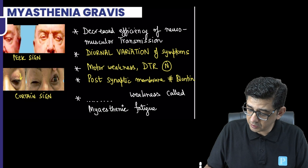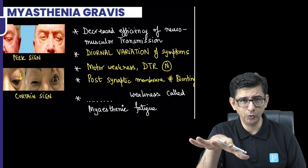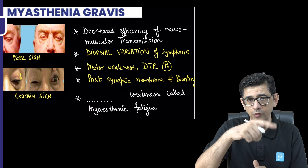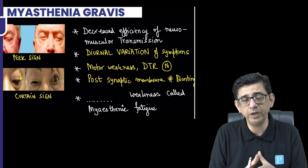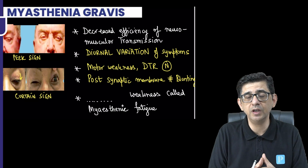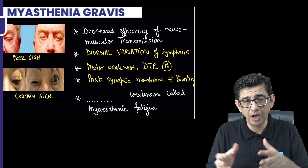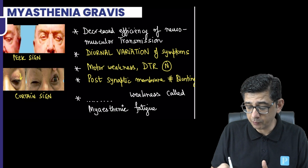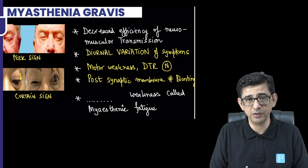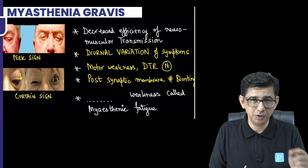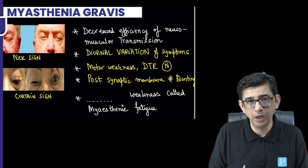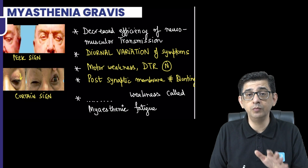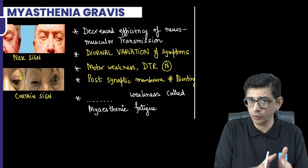This blunting of the post-synaptic membrane is analogous to the flattening of villi in celiac disease — not villi, but the surface area of the post-synaptic cleft. The complement-mediated damage reduces the surface area where acetylcholine receptors are expressed and clustered. This explains the burnt-out stage of Myasthenia Gravis: initially, pyridostigmine shows excellent results in the early phase, but the same patient after a couple of years may start developing fasciculations instead of improved muscle power.